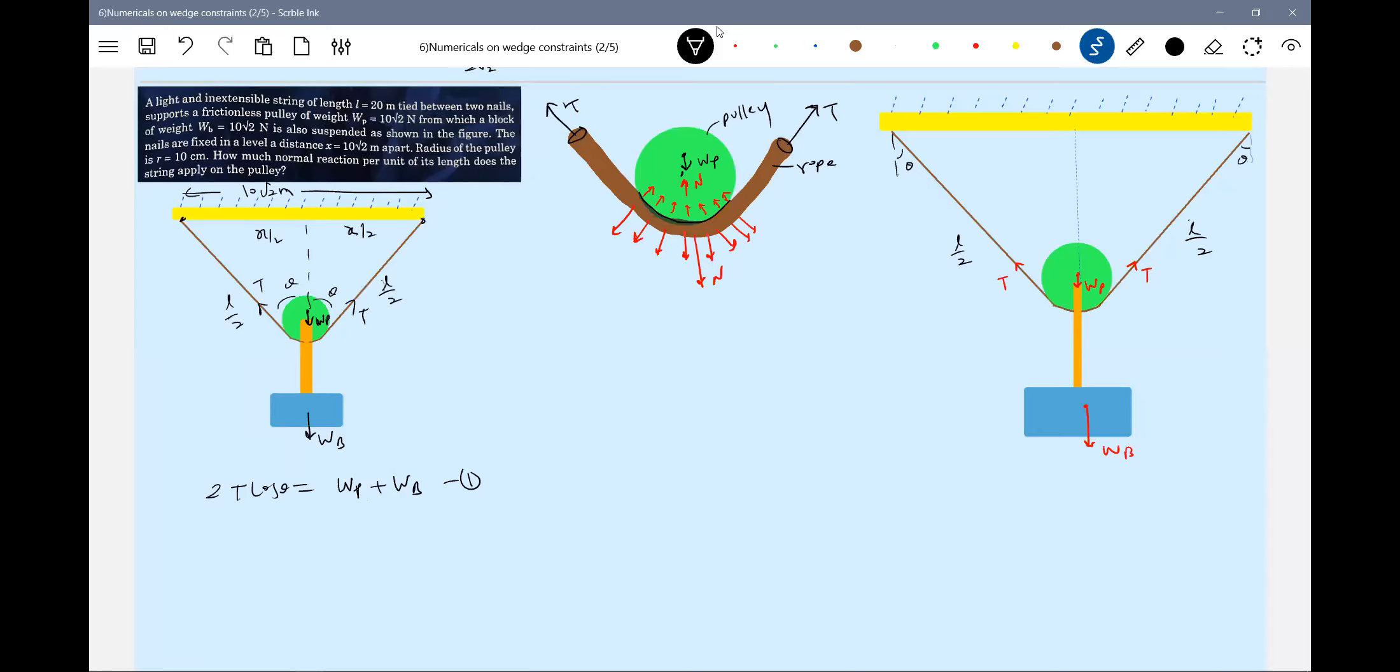For first year, let me do this. Cos theta equals root of l by 2 all square minus x by 2 all square by l by 2. Please look at the diagram. This should equal weight of the pulley plus weight of the block.